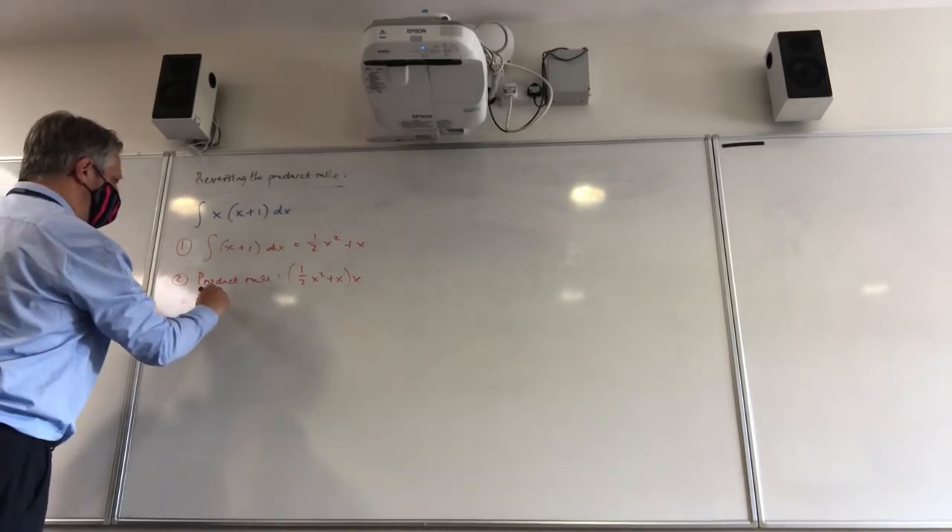The second step we're going to take is we're now going to use the product rule. And we're going to use that piece of information there, half x squared plus x, and multiply it by the one we didn't integrate, x. So we take that piece of information and multiply it by the x. And if we use the product rule here, we know the product rule is v du plus u dv, which in this instance is going to be x times the derivative of that, which is x plus one. That's the v du bit. Plus the u dv - u is a half x squared plus x, times the derivative of v, which is just going to be times one.